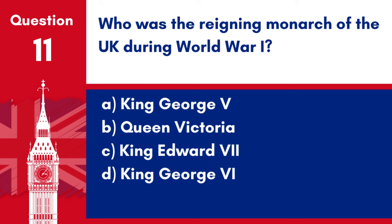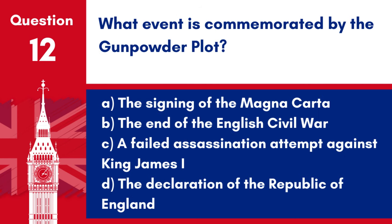Question 11. Who was the reigning monarch of the UK during World War I? a. King George V. b. Queen Victoria. c. King Edward VII. d. King George VI. Answer: a. King George V. King George V was the reigning monarch of the UK during World War I.